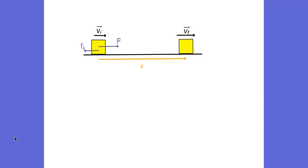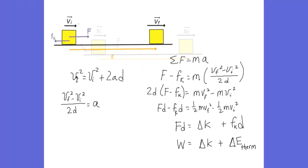Now let's look at an example in which we do not neglect friction. On a particle-like object — a block — we push it across the table with a constant force F. While moving across the table, it also experiences a kinetic frictional force. Using Newton's second law, the sum of the forces equals mass times acceleration. In the x direction, there are two forces: the pulling force F to the right and the kinetic frictional force Fk opposing the motion to the left. So the sum is F minus Fk equals mass times acceleration.